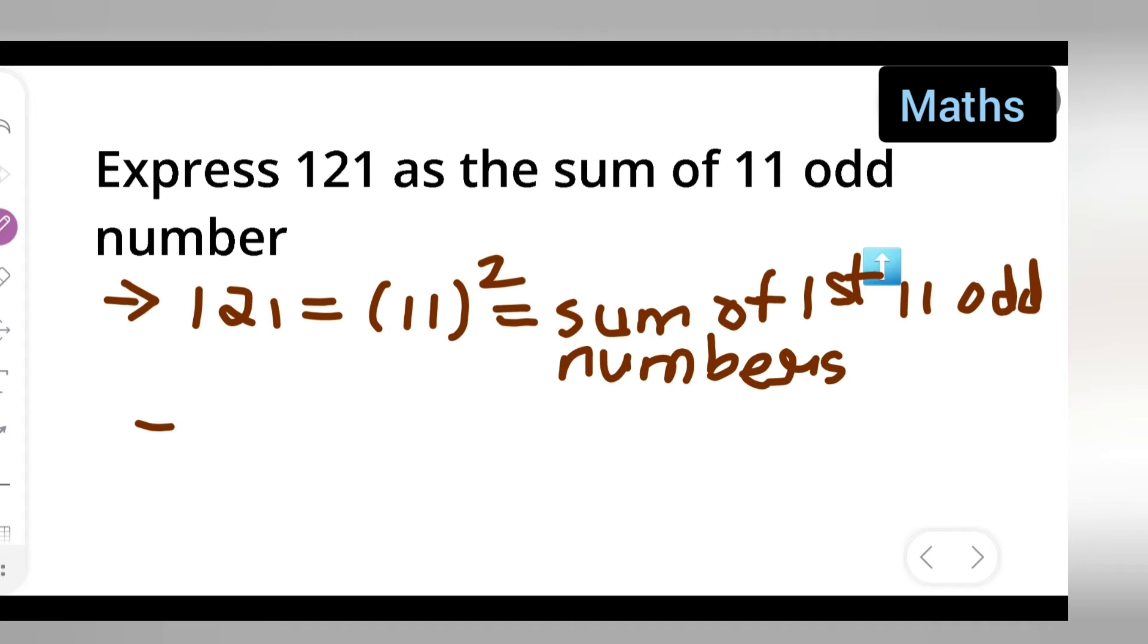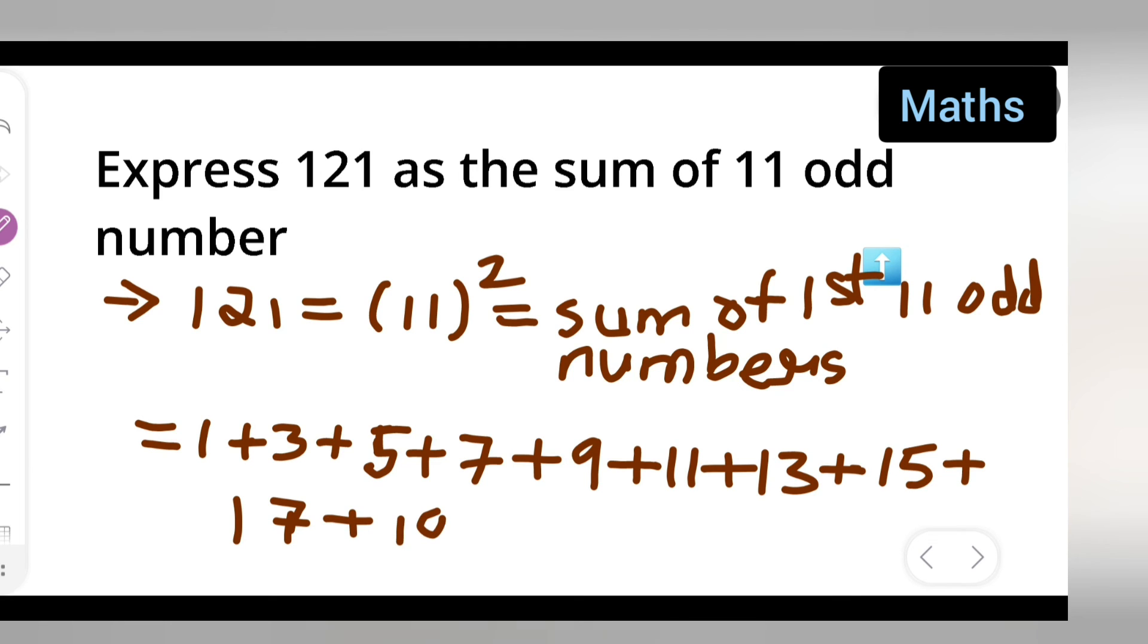Now I can write down first odd numbers. You have to add 1 plus 3 plus 5 plus 7 plus 9 plus 11 plus 13 plus 15 plus 17 plus 19 plus 21.